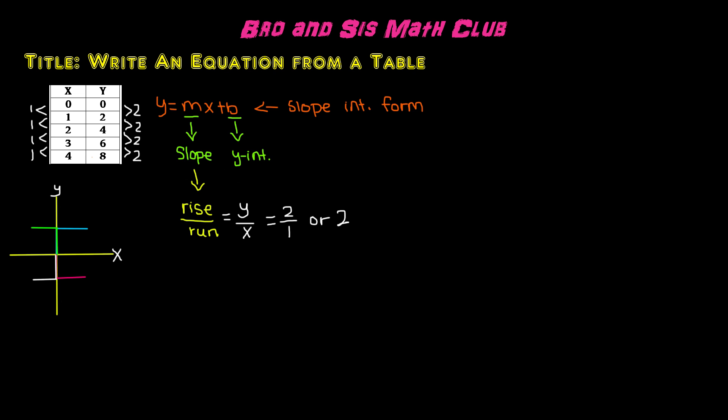Now that we know the slope, let's go ahead and find the y-intercept. In order to find the y-intercept, we just take any point and plug it into the equation. Let's say we're using 3, 6. So we have 6 for the y. 6 equals the slope 2 times x, which is 3, plus b.